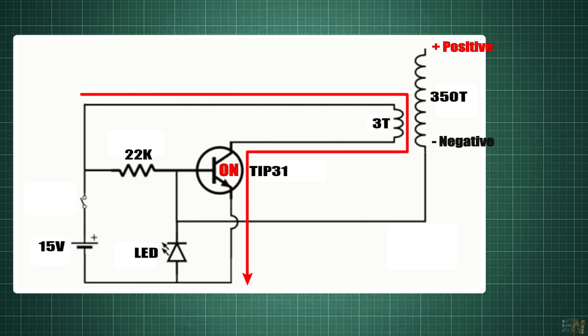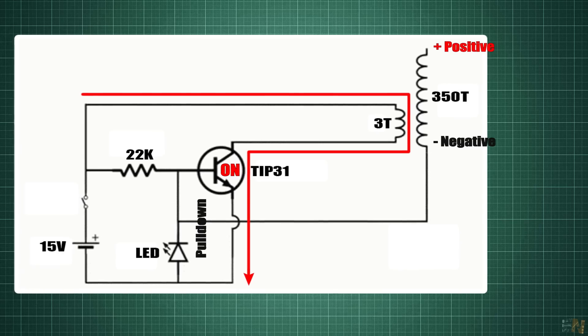So now, this negative polarity is also connected to the base of the transistor and when this value reaches the threshold value of the diode, it will then pull down the transistor base and by that it will turn it off.